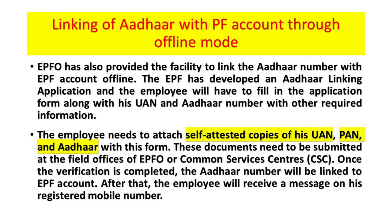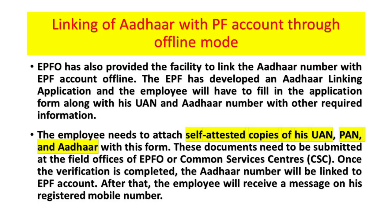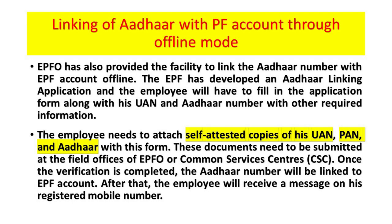Linking Aadhaar with the PF account through offline method: EPFO also provides the facility to link the Aadhaar number with the EPF account offline. EPFO has developed an Aadhaar linking application form, and the employee will have to fill it along with UAN, Aadhaar number, and other required information. The employee needs to attach self-attested copies of UAN, PAN, and Aadhaar with the form. These documents must be submitted at the field offices of EPFO or Common Services Centre (CSC) at the Regional PF Office. Once verification is completed, the Aadhaar number will be linked to the EPF account.